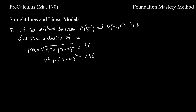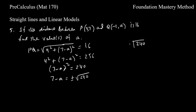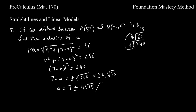Squaring both sides: 4² + (7-a)² = 256. Since 4² = 16, subtracting gives (7-a)² = 256 - 16 = 240. So 7 - a = ±√240. Simplifying √240: divide by 4 to get 60, then divide by 4 again to get 15, so √240 = 4√15. Therefore a = 7 ± 4√15.